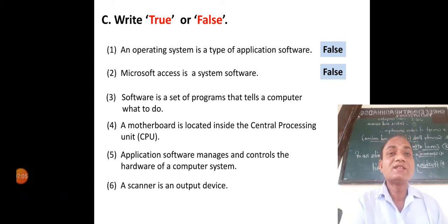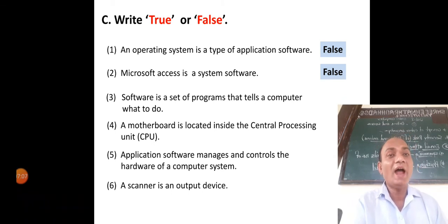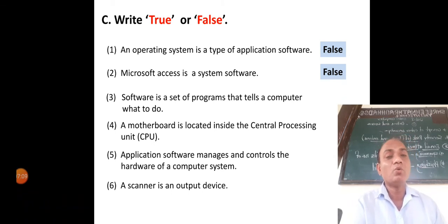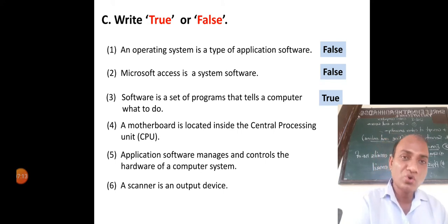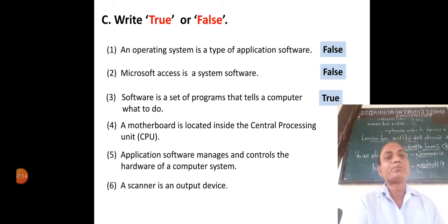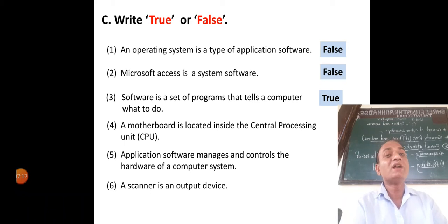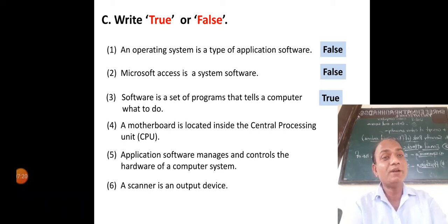Third statement — software is a set of programs that tells a computer what to do. This statement is true. Fourth statement — a motherboard is located inside the central processing unit. This statement is true.